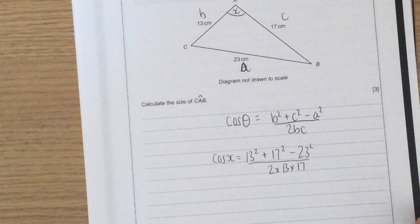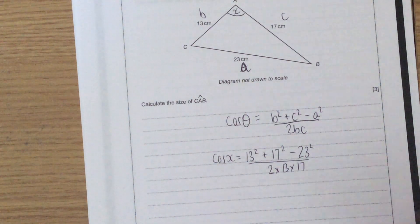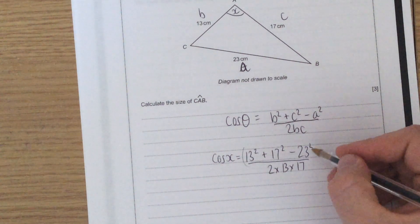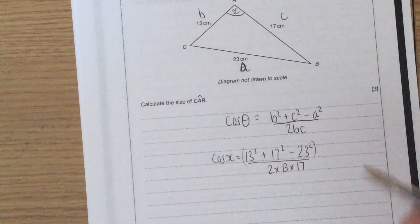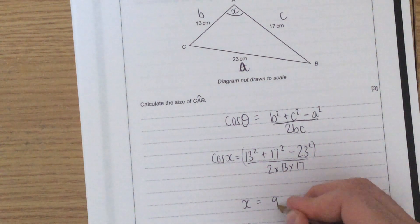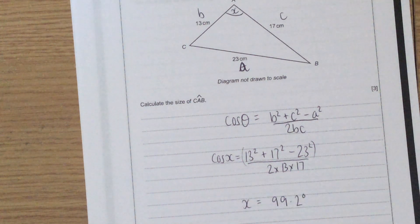Now if you've got a decent calculator, you can plug that all in in one go, and you can do shift cos at the same time. If you haven't got such a great calculator, I would work this bit out first. Just remember, if you're going to do it without the fraction button, put a bracket there, and then do shift cos to finish, and you should get that x equals 99.2 degrees.